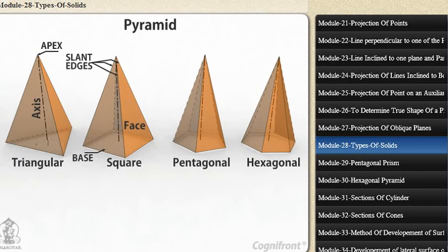Prisms and pyramids are named according to the shape of their bases as triangular, square, pentagonal, hexagonal, etc.